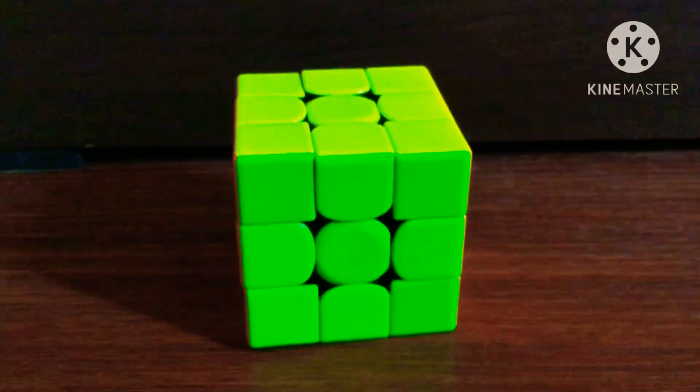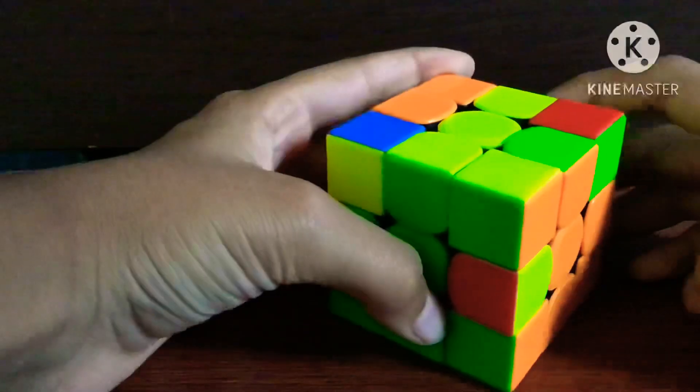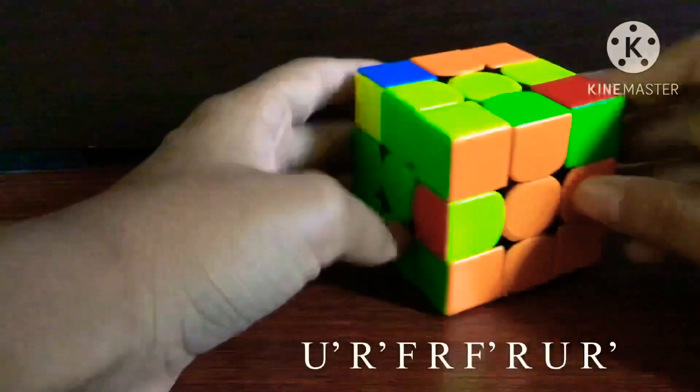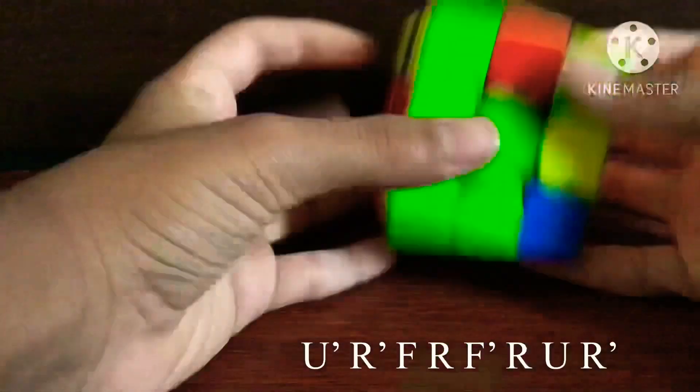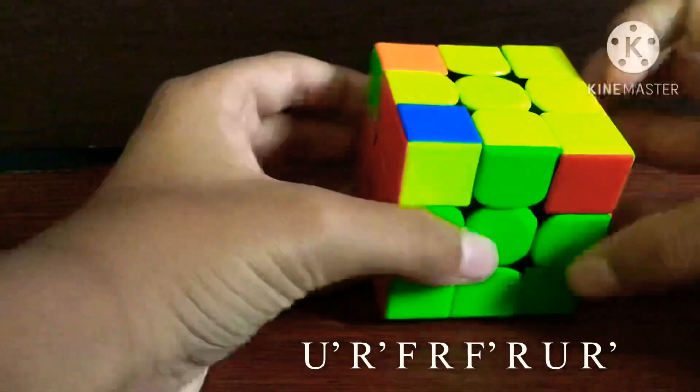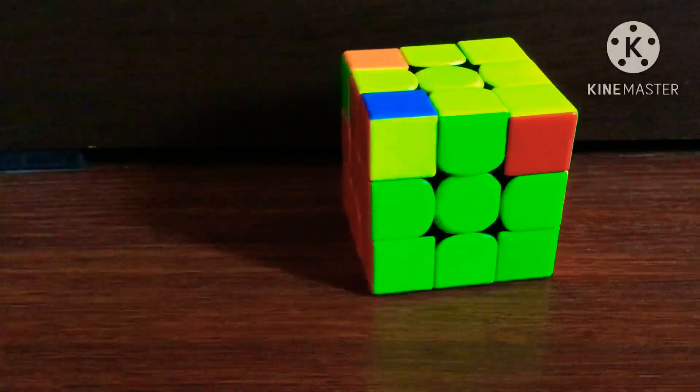So in the next case there is a line. If you get this case, you just move the edge away, do a sledge, and then this is a pair. So this makes the yellow cross.